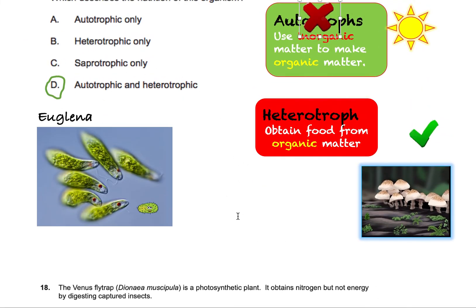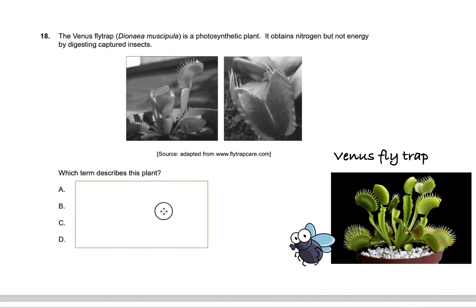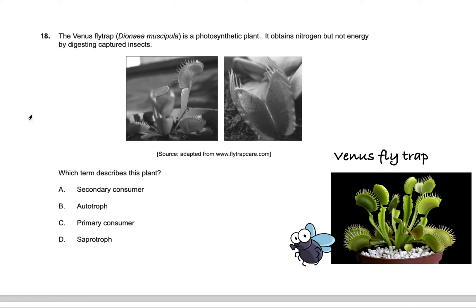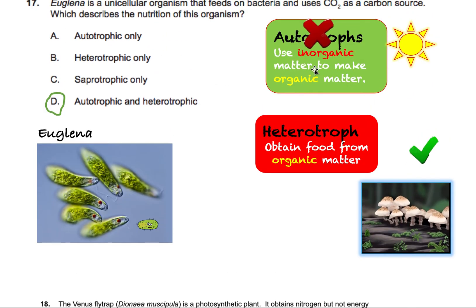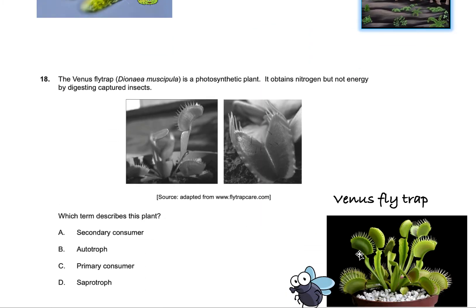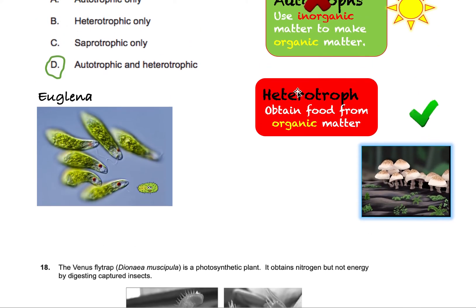The next question is really related to this. The Venus flytrap — scientific name Dionaea muscipula — is a photosynthetic plant. It obtains nitrogen, but not energy, by digesting captured insects. These plants are pretty cool because they're like plants but they can also eat things. Many people get confused and think that because they're plants that can eat, they should technically be considered both autotrophic and heterotrophic — since they can make their own food and also eat flies.